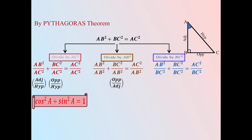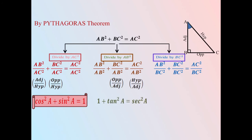Similarly, in the second equation, BC / AB is the ratio of the opposite side to the adjacent side, and AC / AB is the ratio of the hypotenuse to the adjacent side. So we get 1 + tan²A = sec²A as the second trigonometric identity.